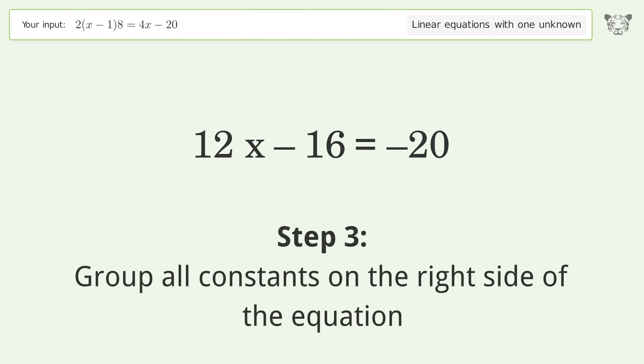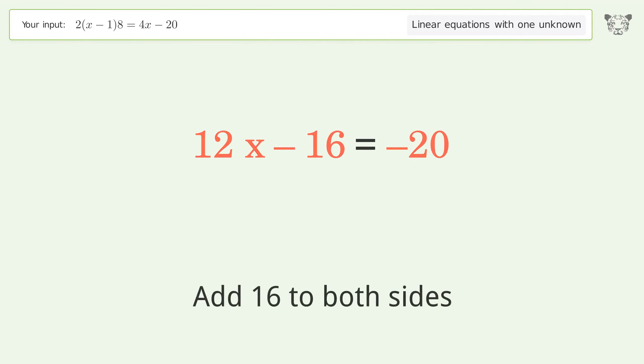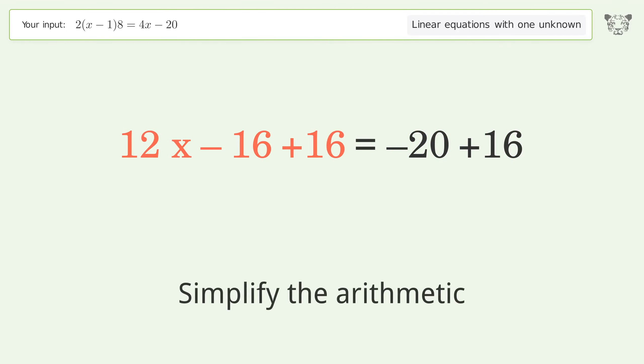Group all constants on the right side of the equation. Add 16 to both sides. Simplify the arithmetic.